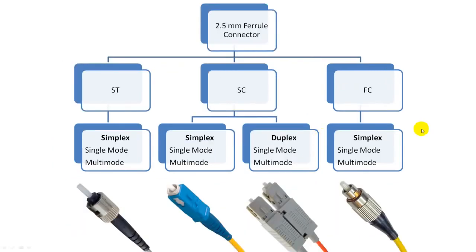Here is a single fiber connector which has a 2.5mm ferrule. The ST connector has a bayonet coupling mechanism. It has a 2.5mm ferrule and is available in simplex version only. ST connector is available in single mode and multimode fiber.